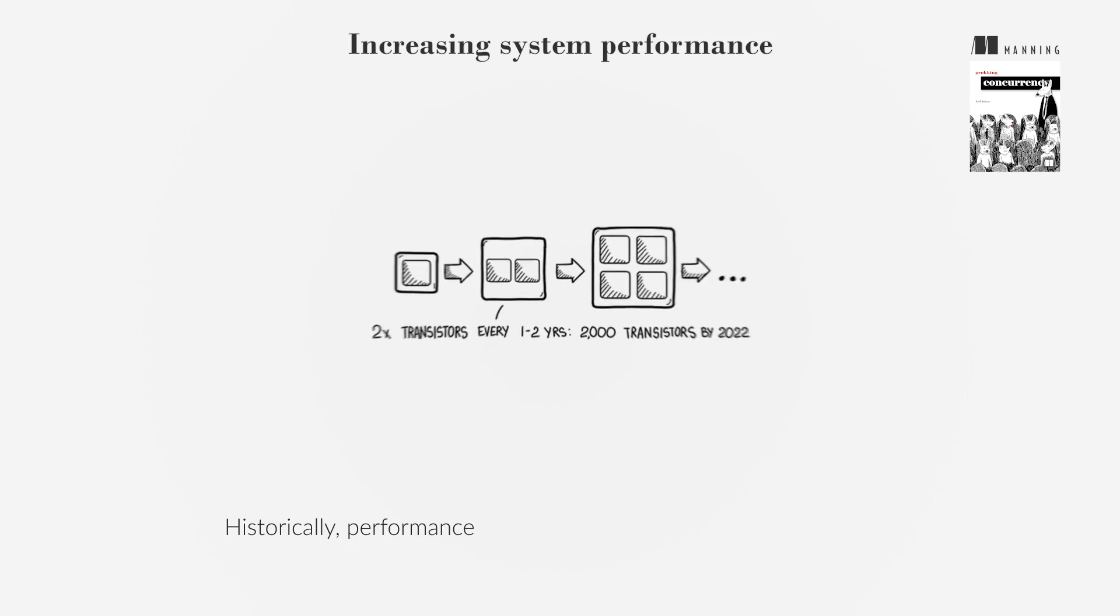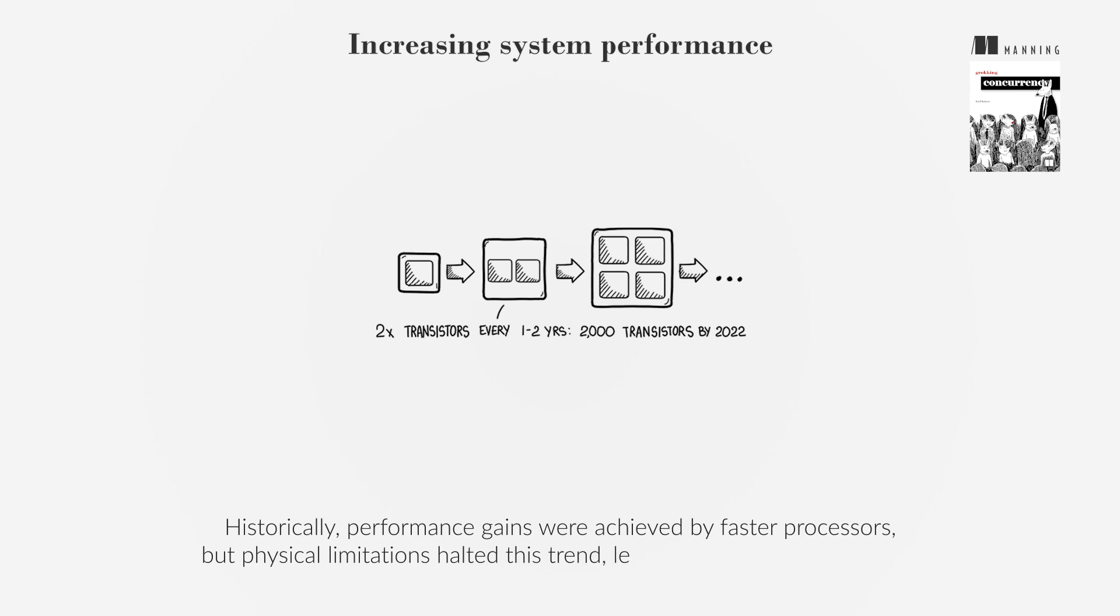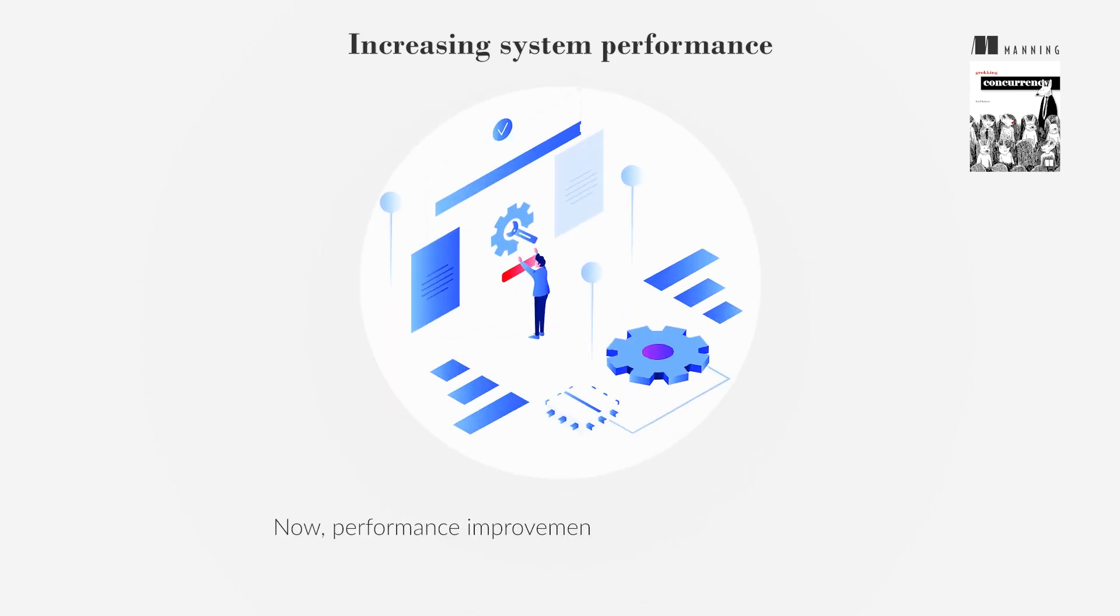Historically, performance gains were achieved by faster processors, but physical limitations halted this trend, leading to the multi-core crisis. Now, performance improvements rely on using additional processing resources effectively, which is where concurrency shines.